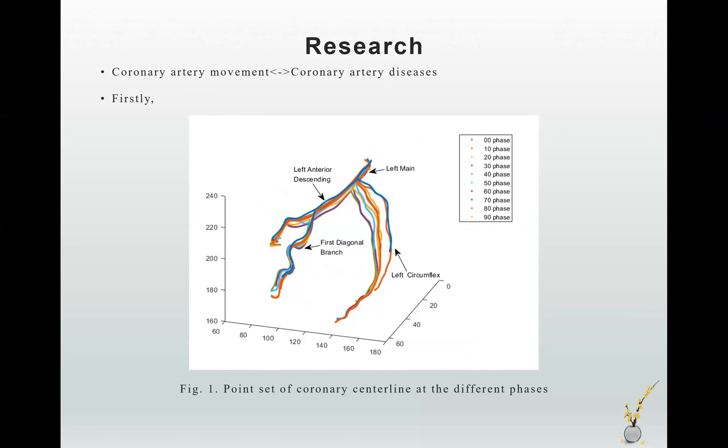My research steps are as follows. First, I extracted and reconstructed the 3D coronary arteries based on the CTA image. Then I used the coronary centerline to represent the coronary arteries at different times in our cardiac cycle, and I used the point set of the coronary arteries to represent this coronary artery. As shown in figure one, figure one is the point set of the coronary centerline at the different phases.